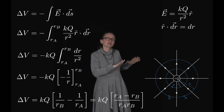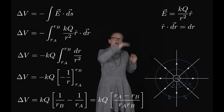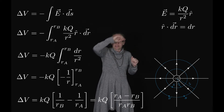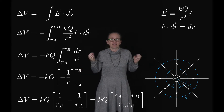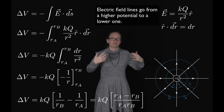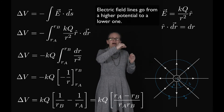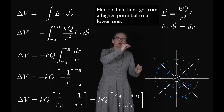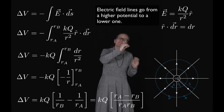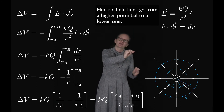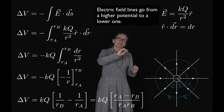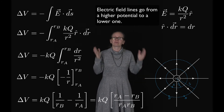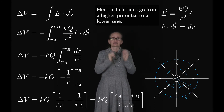This result is negative because radius A is smaller than radius B — we're moving outwards. This is exactly what we expect: positive particles move from higher to lower potential, so the potential at B should be lower than at A, meaning ΔV = VB - VA is negative. Which is what we got.